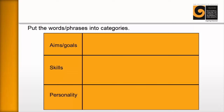A useful way of getting learners to refine and categorize the words and phrases they've come up with is to put them into categories, as you can see here: aims and goals, skills, and personality — which you might call dispositions, but I find personality is easier. The idea is that this is judgment free; we're just trying to collect ideas from the learner. Sometimes I do this one on one with the learner as well.